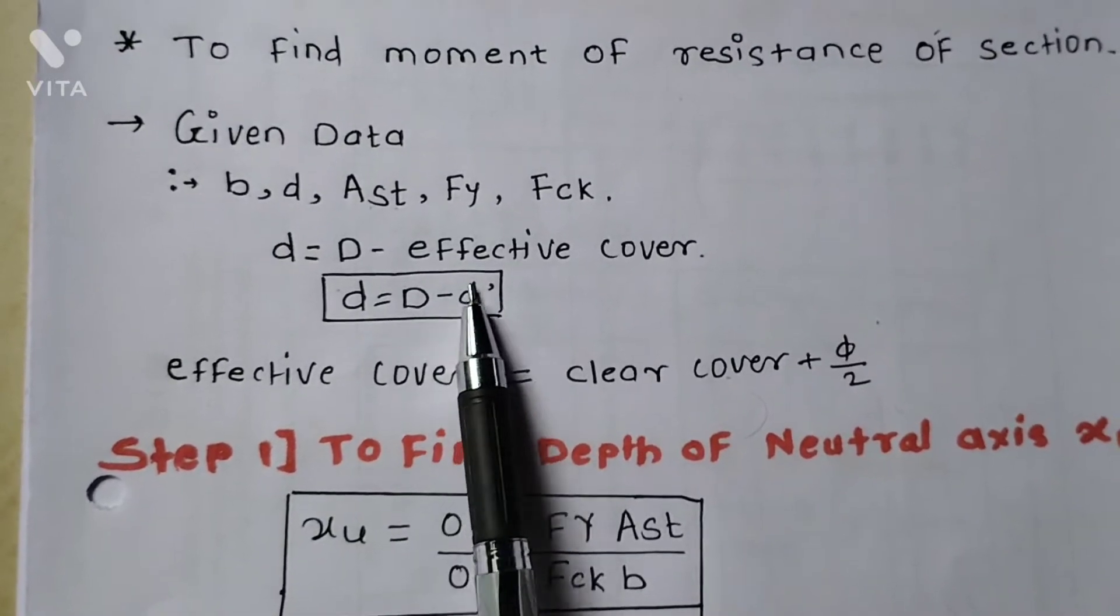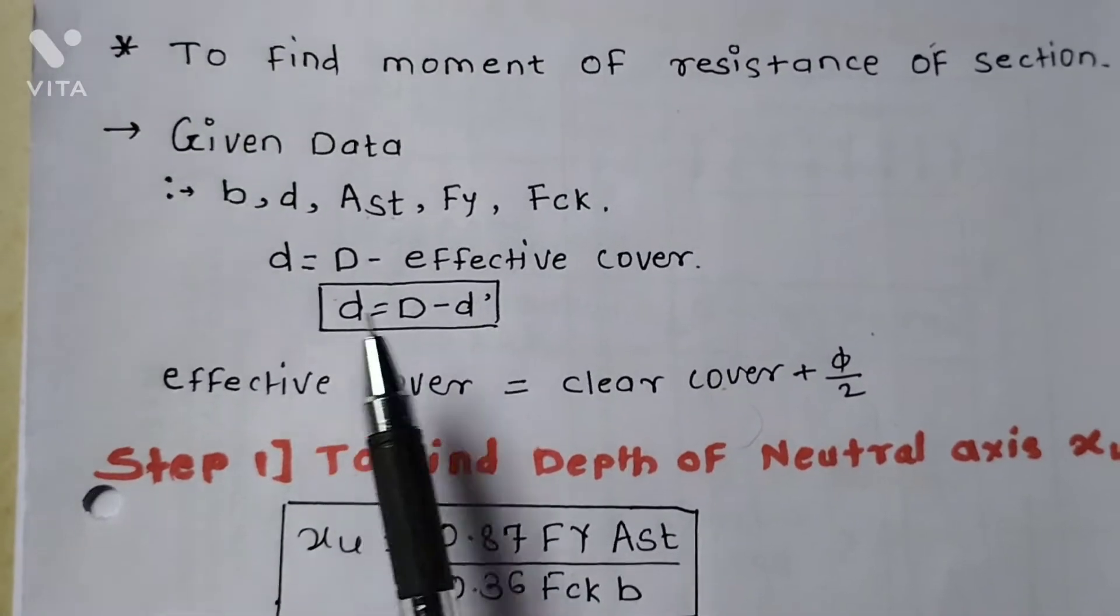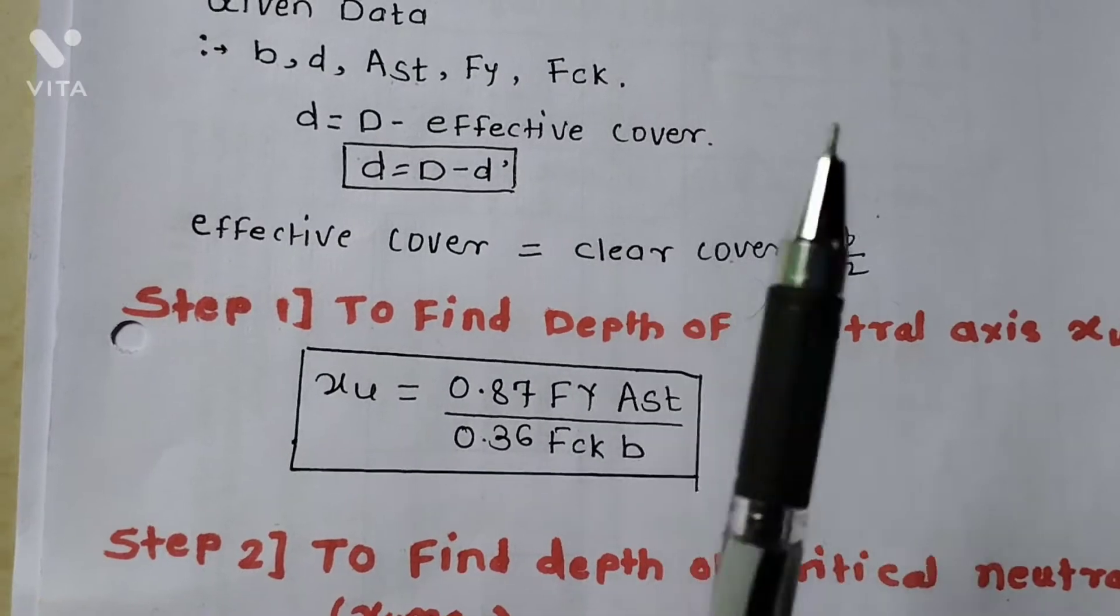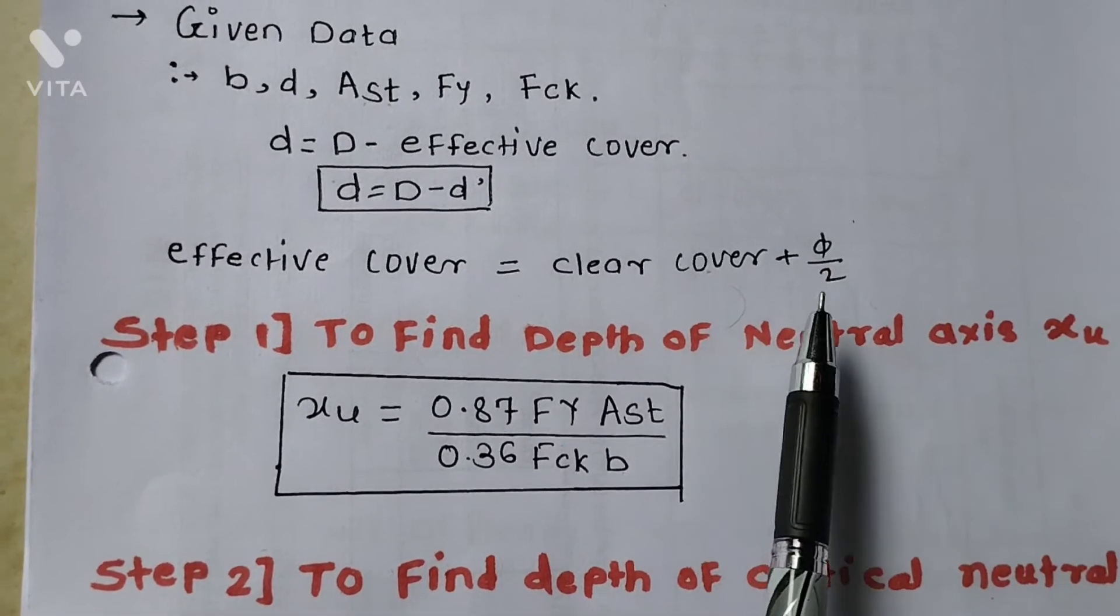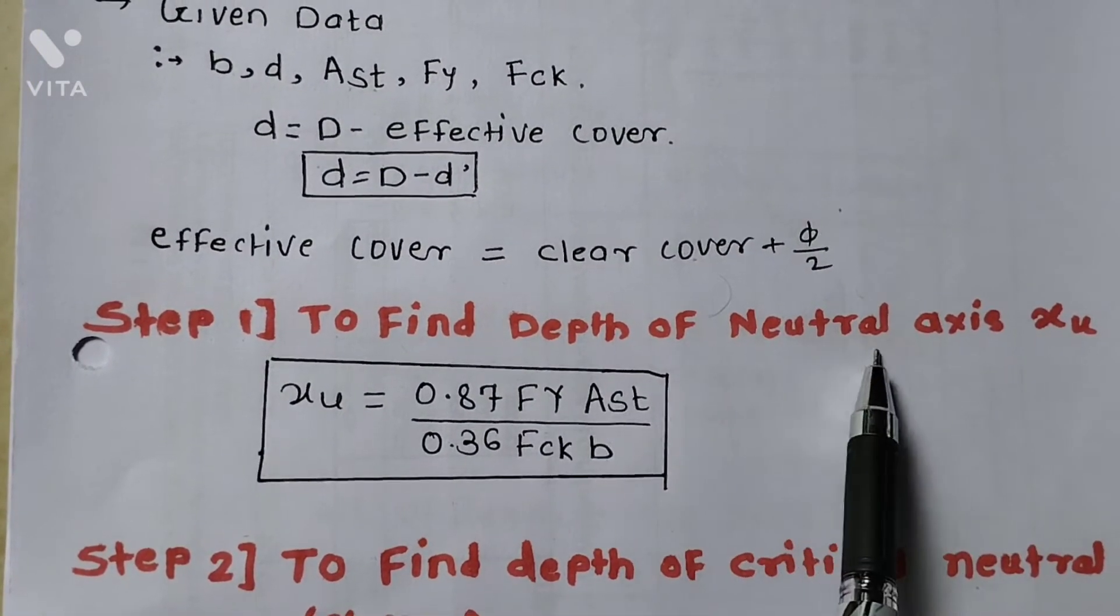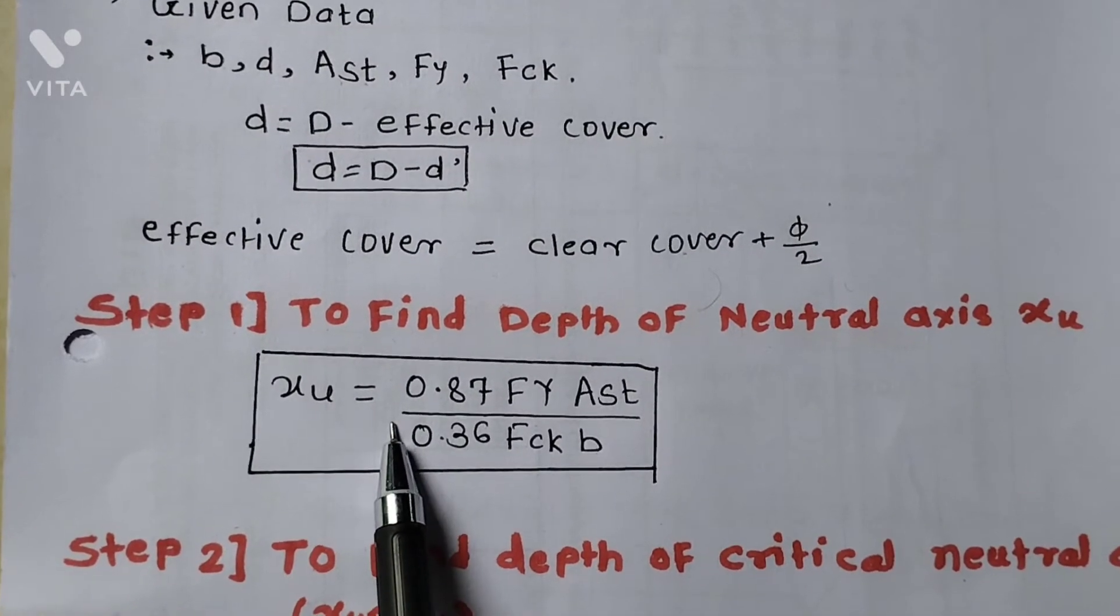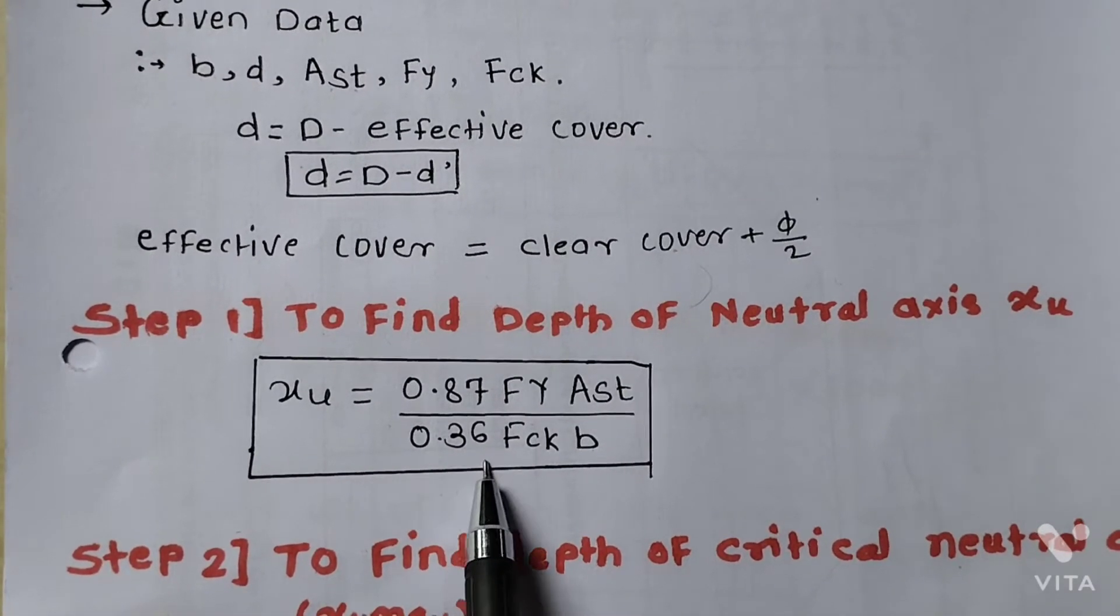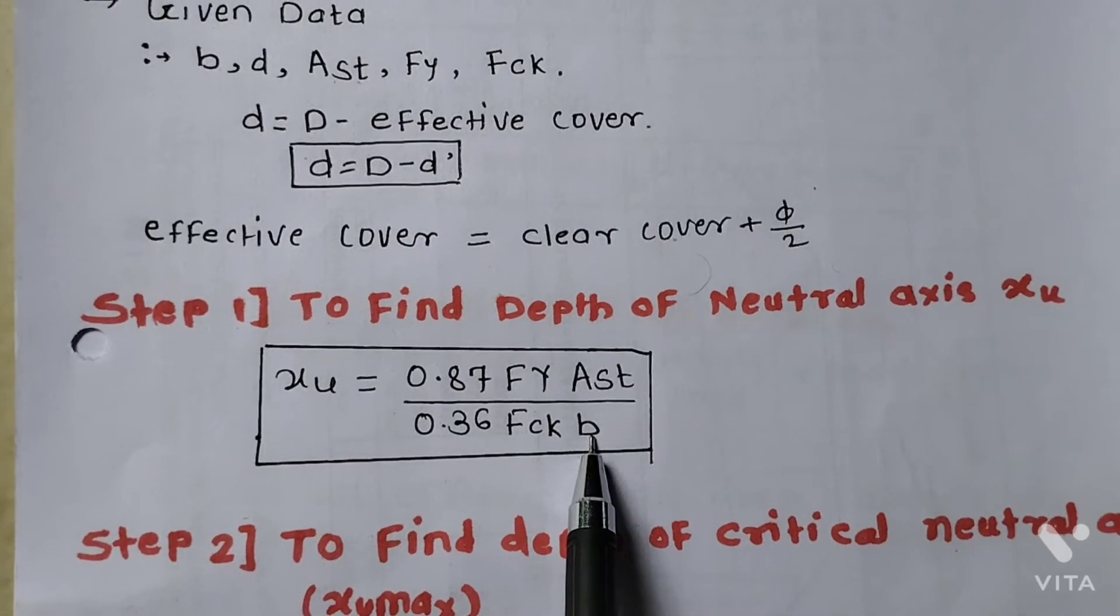Overall depth minus effective cover gives the depth of the beam. Effective cover equals clear cover plus diameter of bar upon 2. Step 1: To find the depth of the neutral axis xu, xu equals 0.87 fy Ast upon 0.36 fck into b, that is width of the beam.